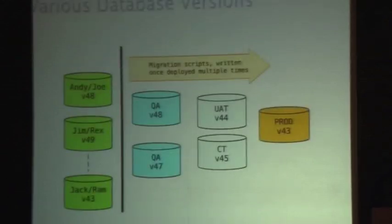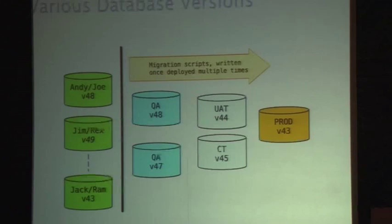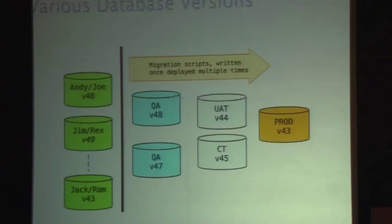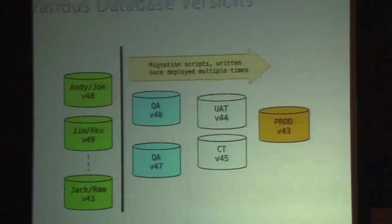This allows various databases to be at different versions. Like some developer pair may be working on fixing a production bug and they want to be on version 43 — they can check out version 43, deploy it, and immediately have a database at version 43 and start working. Or you may want to have two or three different versions in QA at the same time. You can deploy as you want just by looking at the version and taking the database artifact as of that version, without having to rely on the DBA or SysOps people to restore a backup from tape.